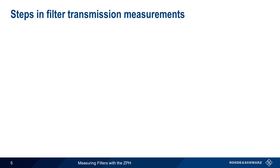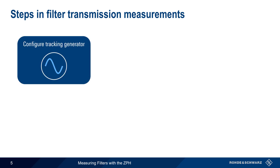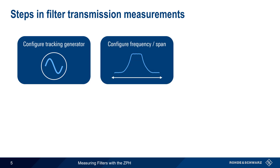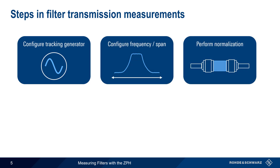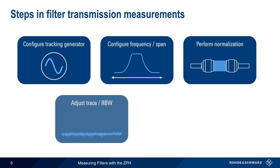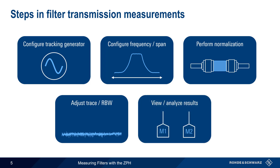There are five basic steps in making filter transmission measurements: configuring the source or tracking generator, configuring the measurement frequency range, performing normalization, adjusting the trace type and/or resolution bandwidth, and viewing or analyzing the results.